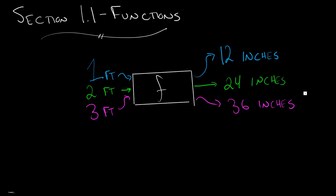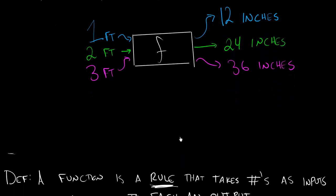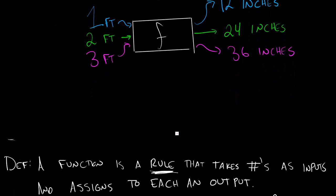And so this is really the core of what we want to think about when we think about a function. We want to think about a machine that takes an input and it spits out an output. And so how would we actually write that down? Let's take a look at the definition from the book.